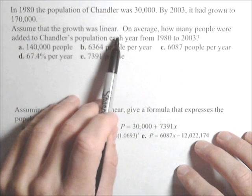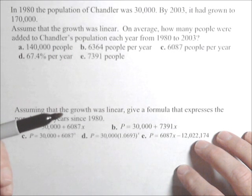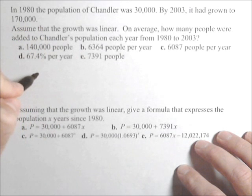So assuming the growth was linear, on average, how many people were added to the Chandler population each year? Because we're assuming it's linear, it's going up by a constant amount, and we need to find the rate of change.